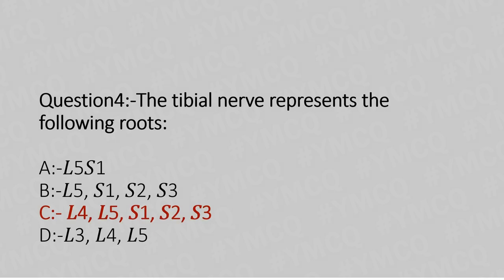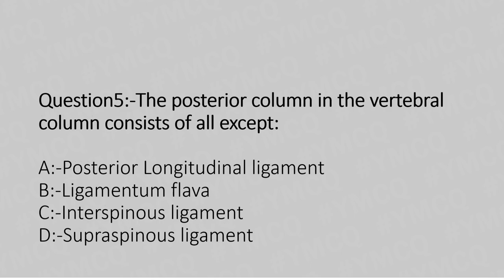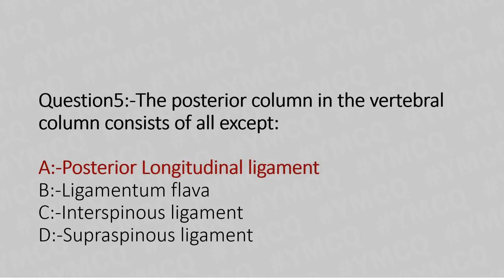Now let's move to question number 5. The posterior column in the vertebral column consists of the following except — option A: posterior longitudinal ligament, option B: ligamentum flavum, option C: interspinous ligament, option D: supraspinous ligament. The answer is option A, posterior longitudinal ligament.